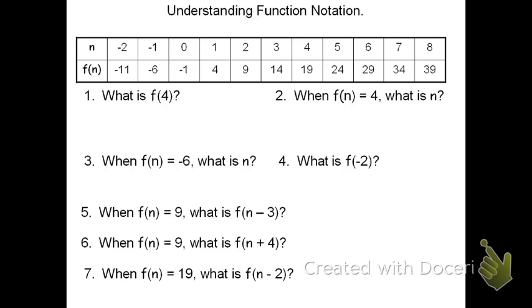To do this, we're going to look at number 1 again. When it says, what is f of 4, we're going to find 4 on the input table. Again, the inputs are on top. So if I find where 4 is, I see it over here. And I can see what the output is. When n is 4, f of n is 19. Therefore, I'll go ahead and write that. The answer for number 1, f of n equals 19.